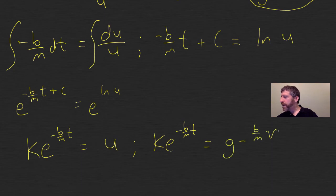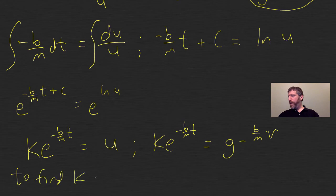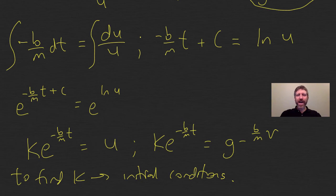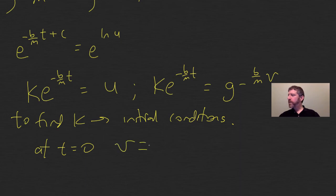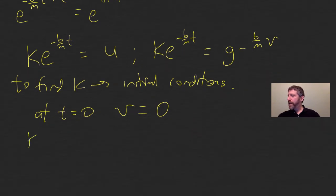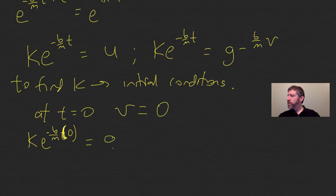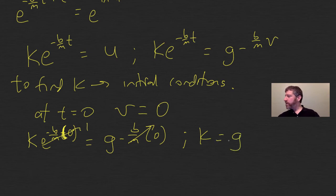So this gives us k e to the negative b over m t equals what u is from before is g minus b over m v. So now we're getting closer. We do have to figure out what k is, just like before. To find k, we've got to appeal to initial conditions. So our initial conditions, if you recall, are that we drop this thing from rest. Such that at t equals 0, what did v equal? We dropped it from rest, so v equals 0. That just means this, that k, whatever k is, we're figuring that out, e to the negative b over m t, which, where t is 0, I'm just going to go ahead and substitute in that 0 there, equals g minus b over m times 0. That means that this is 0, this is 1. That means that k equals g. So here's what we finally have. We're getting very, very close to the end here.